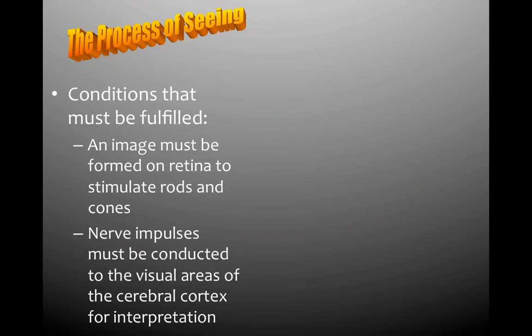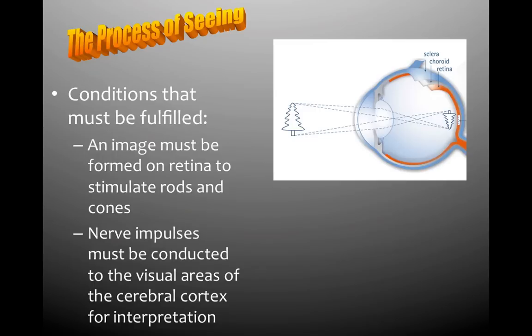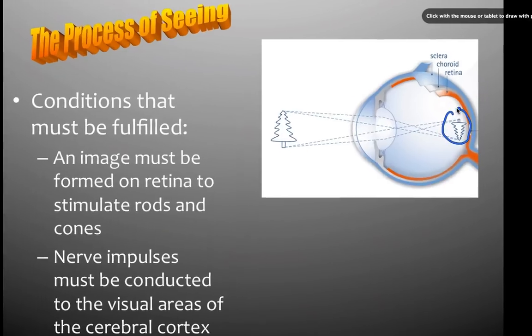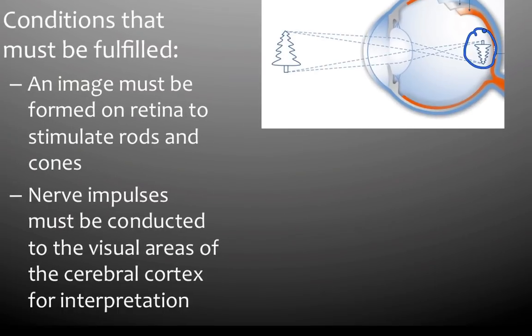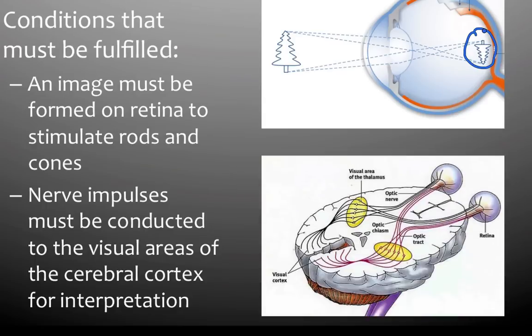Now we're going to get into the process of how we actually see. Two conditions must be fulfilled. First, an image must be formed on your retina to stimulate the rods and cones — the image of an object goes into the eye through the lens and is projected on the retina inverted. Second, nerve impulses must be conducted to the visual areas of the cerebral cortex for interpretation. Although the eye does the work, it's really your brain that sees — your brain interprets those action potentials into something real.